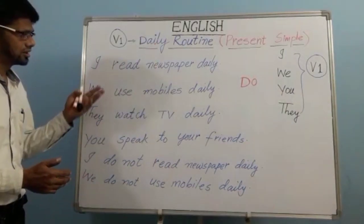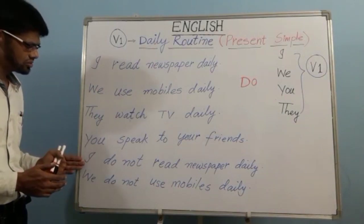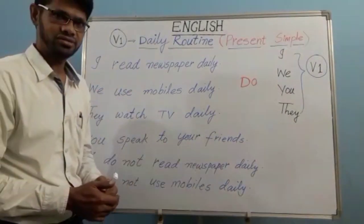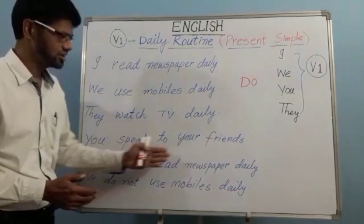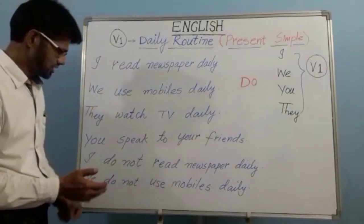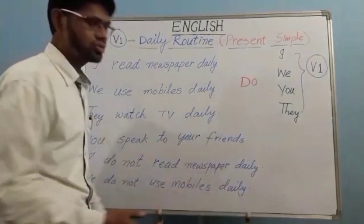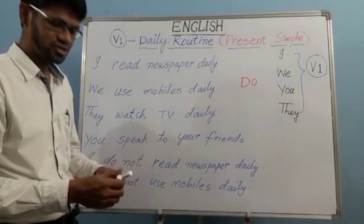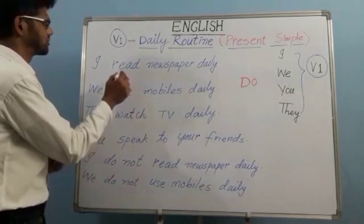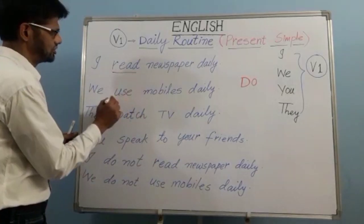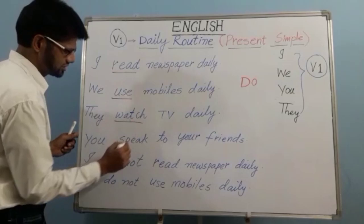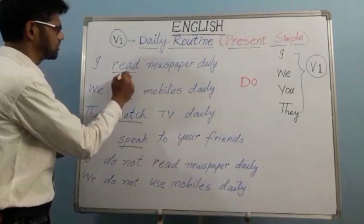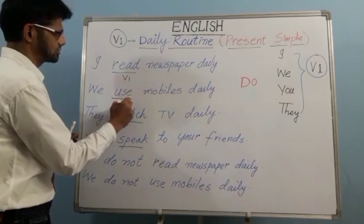If you want to make a negative sentence, use 'do not.' For example: I do not read newspaper daily. We do not use mobile phones daily. The verbs used here — read, use, watch, speak — are all V1 form.